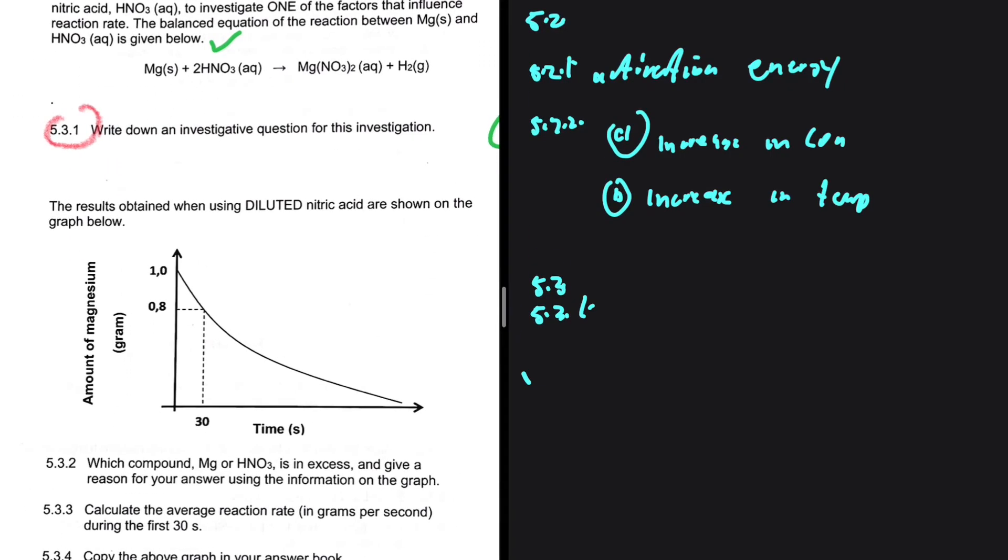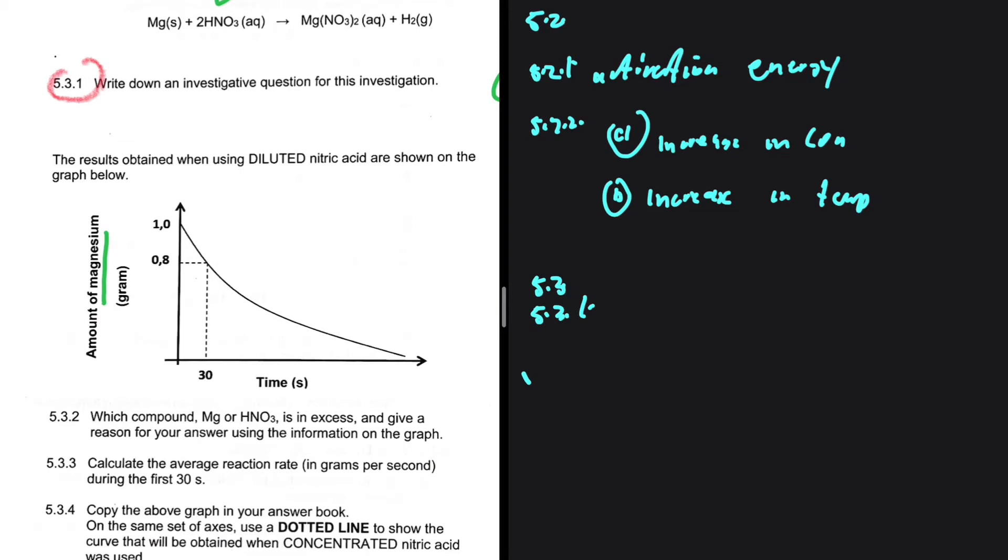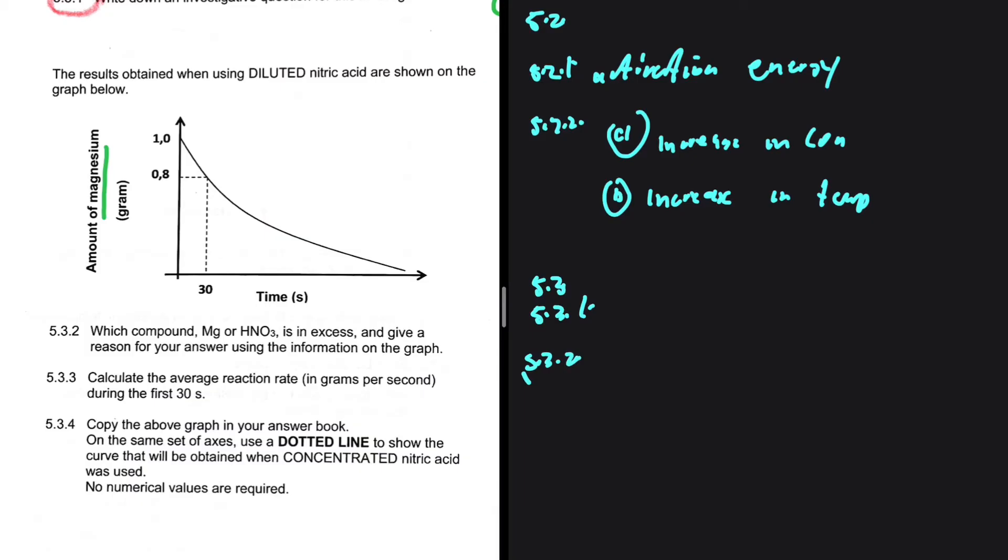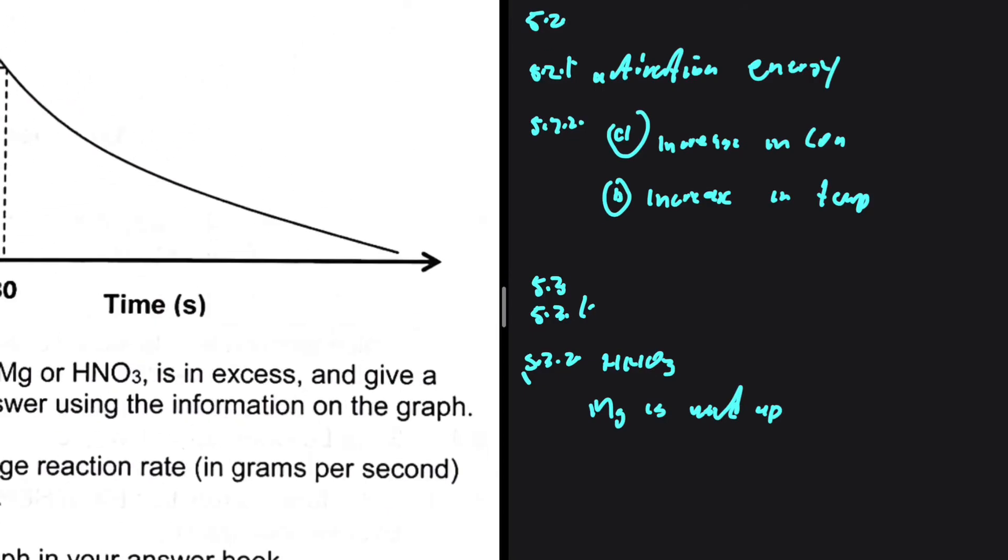Let's take a look at 5.3.2. The results obtained when using diluted nitric acid are shown on the graph below. We are given the mass of magnesium versus time. 5.3.2, which compound, magnesium or nitric acid, is in excess? Give a reason for your answer using the information on the graph. You can see that nitric acid is our reactant in excess because magnesium is used up, right? But then if you take a closer look, you're going to realize that the mass of magnesium actually doesn't get finished because it doesn't touch the x-axis here. So why are we saying magnesium is used up when it doesn't touch the x-axis? A lot of things are wrong in this question.